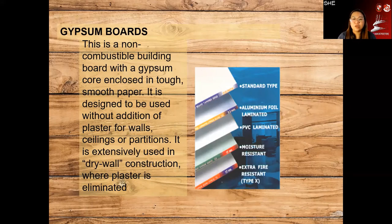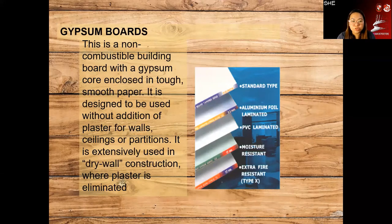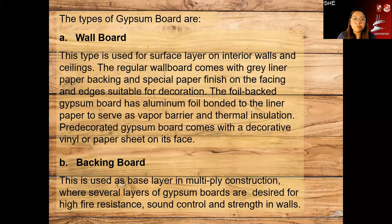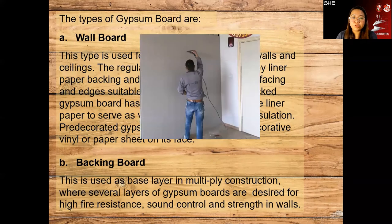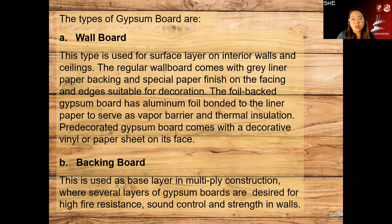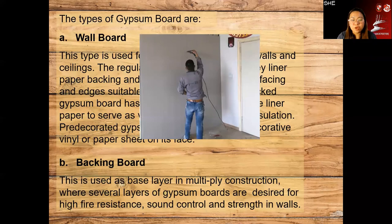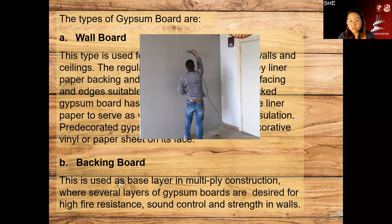We have gypsum boards — non-combustible building board. Because it's not easy to ignite, with a gypsum core and lightweight design, it's designed to be used without additional plaster for walls, ceilings, or partitions. It's good for drywall construction. When we say drywall construction, it means using smooth board partitions for walls. Types include regular gypsum board for interior walls and ceilings, backing board for base layers in multi-ply construction designed for high fire resistance, sound control, and strength in walls.